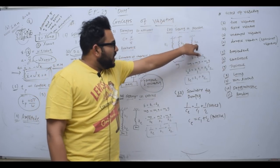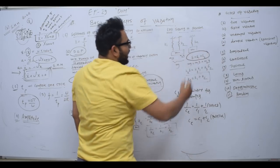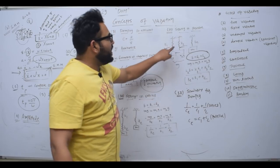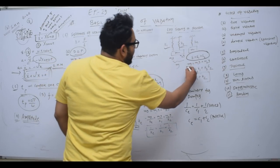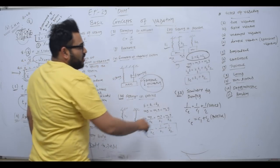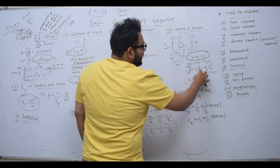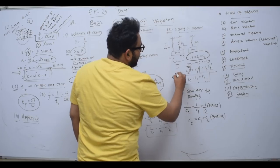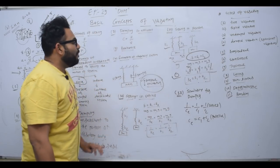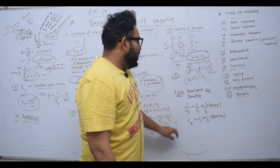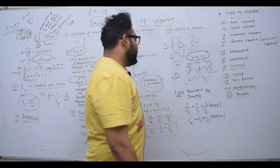For springs in parallel, the deflection is the same for all springs, and the total force equals F1 plus F2. Since force equals k times delta, we get: k_eq × δ = k1 × δ + k2 × δ, so k_eq = k1 + k2. The same rules apply for dampers: dampers in series give 1/c_eq = 1/c1 + 1/c2, and dampers in parallel give c_eq = c1 + c2.